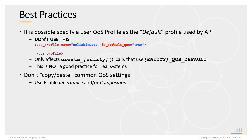When creating XML — or coding in general — copy-pasting QoS settings from one profile to another should raise an alarm. If you ever have to modify that setting, you'll have to track down every place you copied it to. Instead, take common QoS settings and use profile inheritance to inherit those common settings, or use profile composition to compose them into your new profile.